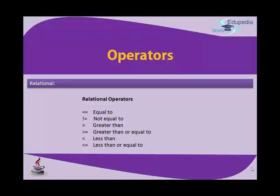The double equals sign (==) is used to compare values — for example, checking if a equals b. If you use only a single equals sign, that is the assignment operator. A single equals sign (=) assigns the right-hand side value to the left-hand side variable. For example, if b is 10 and you write a = b, then a becomes 10. To check equality between two values, you must use double equals (==).